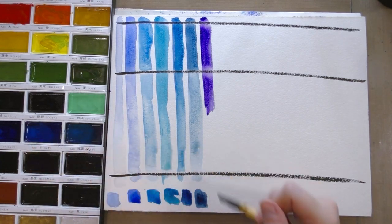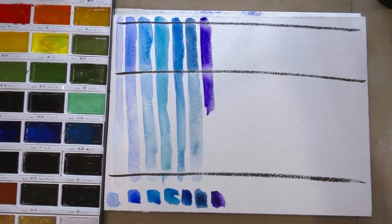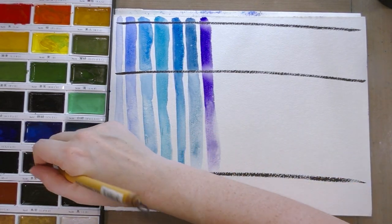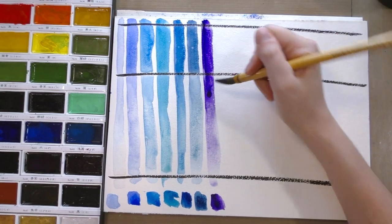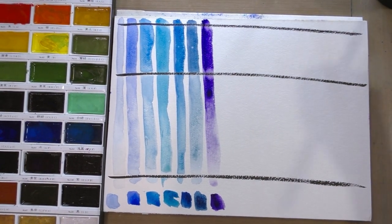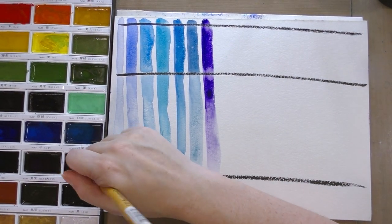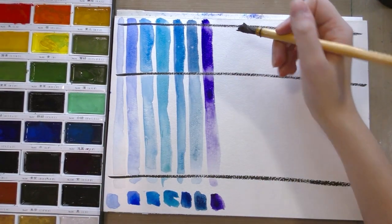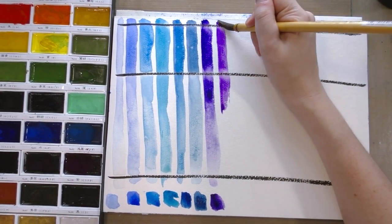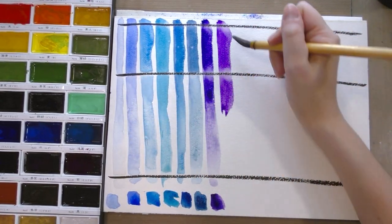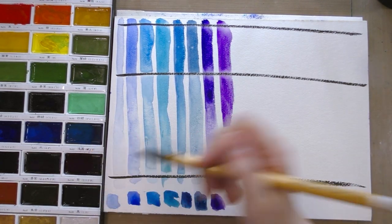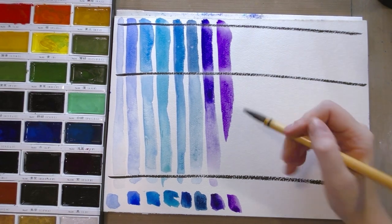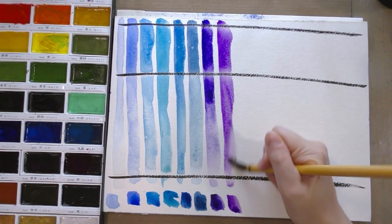So as you guys can probably see, we get a lot of color options in the 36 color set. The thing with Gensai Tambi style watercolor is yes, you can mix your own colors. However, you're usually painting so fast that it is more convenient to be able to rely on pre-mixed colors. Which is why we'll get so many variations of what would seem like the same color for many Western artists. Think of these as convenience colors. They're pre-mixed so that you can work faster.